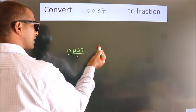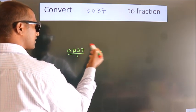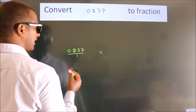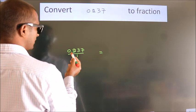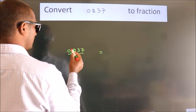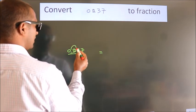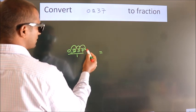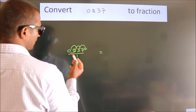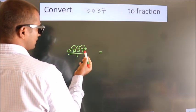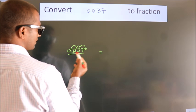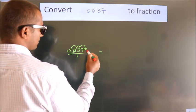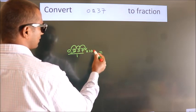To convert this to a fraction, we have to move this decimal after 1, 2, 3 numbers. To move this decimal after 3 numbers, multiply it with 1000.